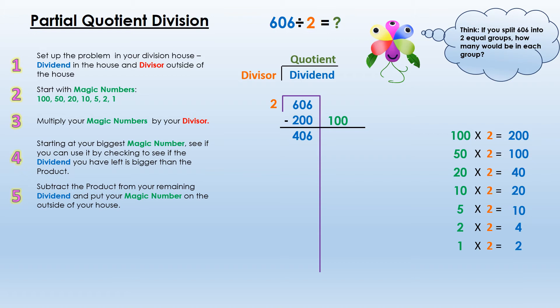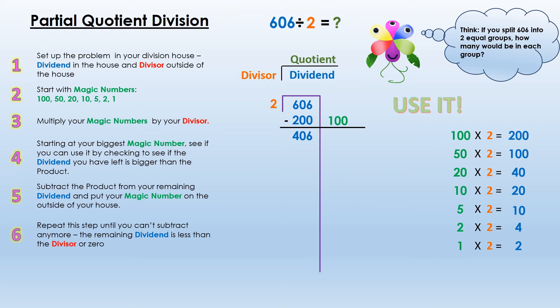Now I go to step 6 and repeat from the top. I look at my 100 again: is 200 less than 406? Can I give 100 to each of those two groups? The answer is yes — I can use it. I put that partial product of 100 to the right of my house, then subtract 200 from 406 to get 206. I'll just keep repeating this until I have no dividend left over.